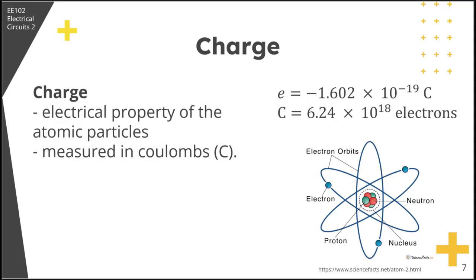There are three things to note about electric charge. First, the coulomb is a large unit for charges. In one coulomb of charge, there are 6.24 × 10¹⁸ electrons. Thus, realistic or laboratory values of charges are on the order of microcoulombs, nanocoulombs, or picocoulombs. Second, according to experimental observations, the only charges that occur in nature are integral multiples of the electric charge e.